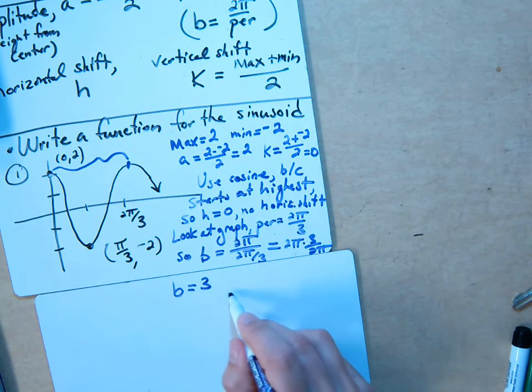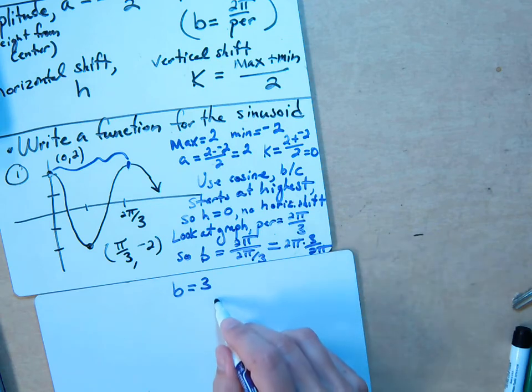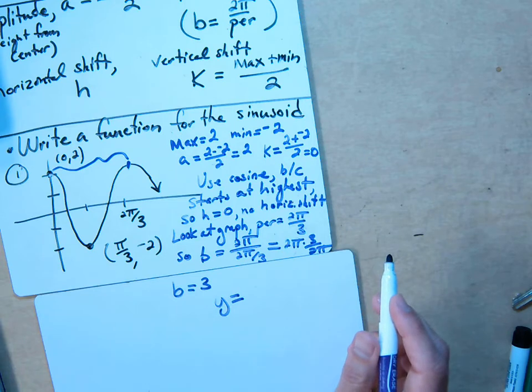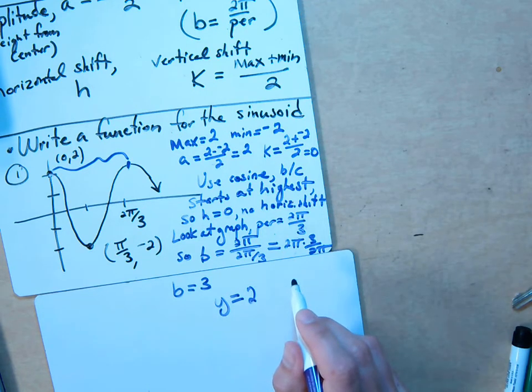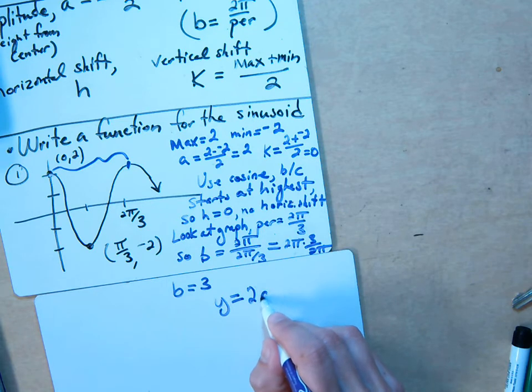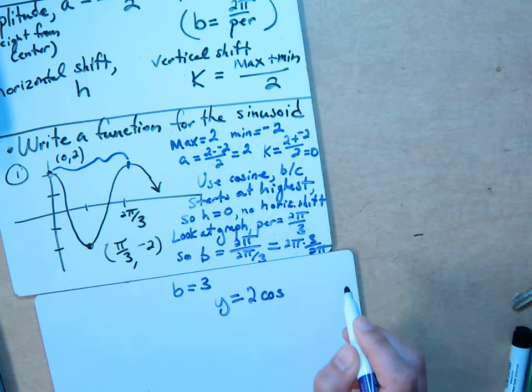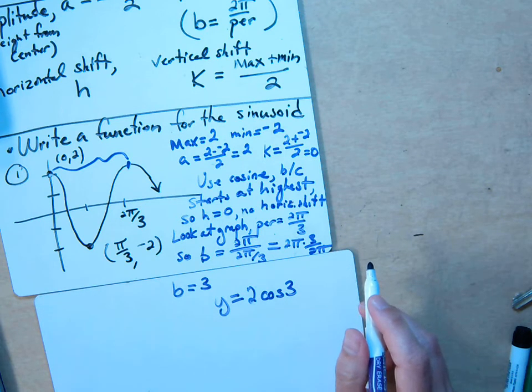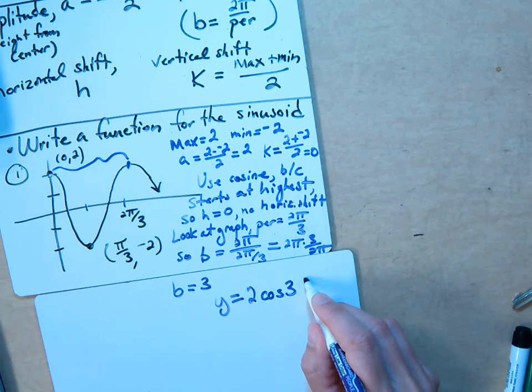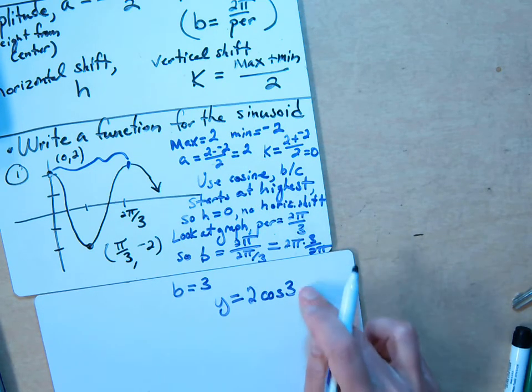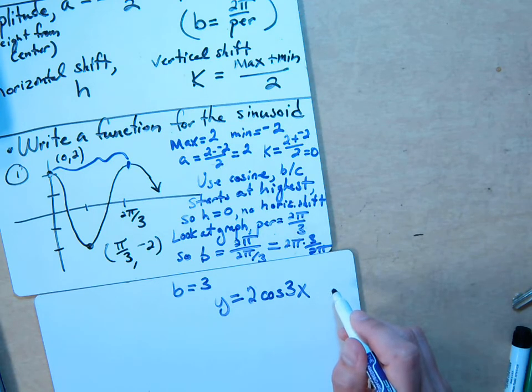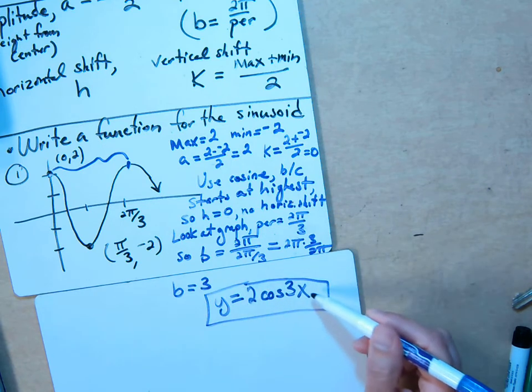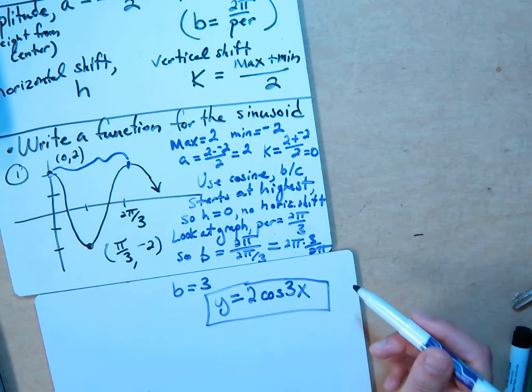The equation is the final answer then. Now we put it all together. y equals a. What was a? 2. And then we decided to use cosine. And what was b? 3. And then b times x minus h. There was no shift, right? So it's just x. There's no h. h is 0. And k is 0. So this is it. There's no minus h or plus k that we would need to write because they're both 0.